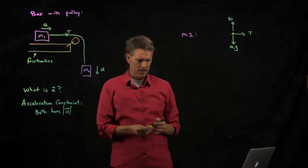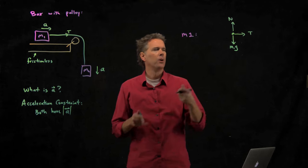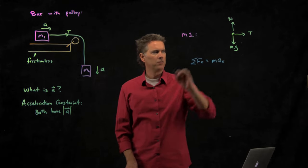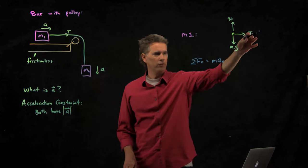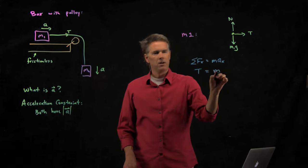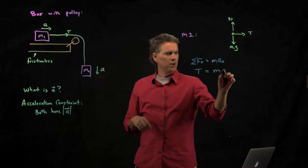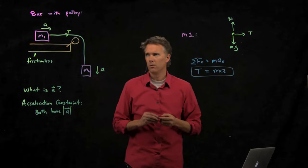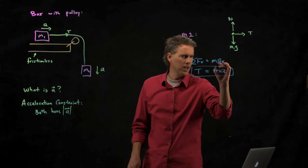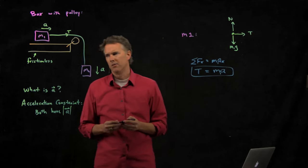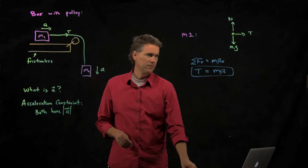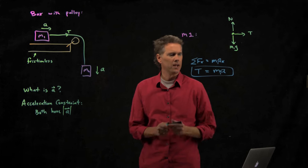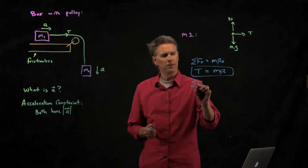Now you can write down Newton's second law for M1. Sum of the forces in the x direction equals the mass times the acceleration in the x direction. We only have one force, it's the tension. The acceleration is just A. So what's the tension in the rope? It's M1 times A. What about the vertical components? Is that really going to help us here? Maybe not, but let's write it down anyway.